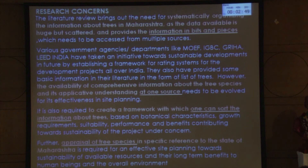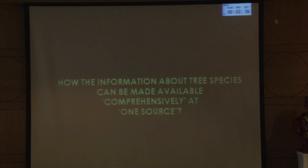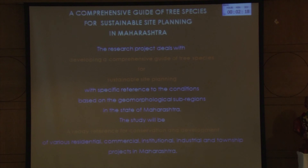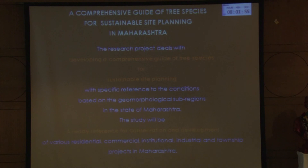An appraisal of tree species is needed — if I want to compare one tree with another or choose from 10 species in a palette, I have no rating system. How can information about tree species be made available comprehensively at one source? I am not an expert in botany; I just tried to put information together in a useful way for landscape architects and architects. The idea was to develop a tree species compilation as part of a comprehensive guide for sustainable site planning in Maharashtra, which could also feed into frameworks like MoEF, GRIHA, and TERI GRIHA.